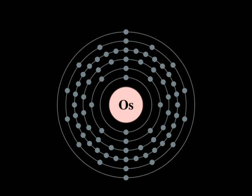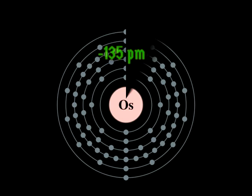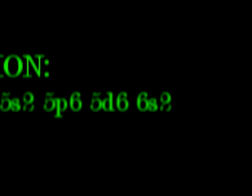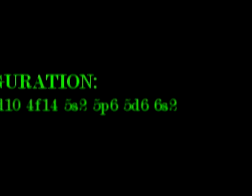The atomic radius is 135 picometers. The electron configuration of Osmium is 1s2, 2s2, 2p6, 3s2, 3p6, 3d10, 4s2, 4p6, 4d10, 4f14, 5s2, 5p6, 5d6, 6s2.